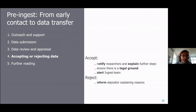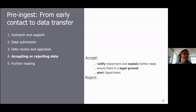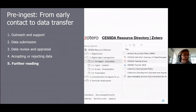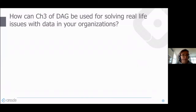If you do reject the data — the data may lack essential documentation, have legal issues, or not correspond to acquisition policies — you must inform the depositor, explain the reasons, suggest a more appropriate repository if possible, and remove the data from temporary storage. For further reading and examples, a good resource is the CESSDA Resource Directory, which under digital object management has a category called pre-ingest acquisition with lots of relevant materials.